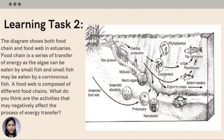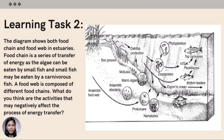For learning task number 2, the diagram shows both a food chain and a food web in estuaries. A food chain is a series of transfer of energy — for example, algae can be eaten by small fish, and small fish may be eaten by a carnivorous fish. A food web is composed of different food chains.